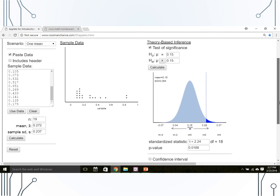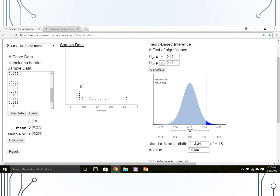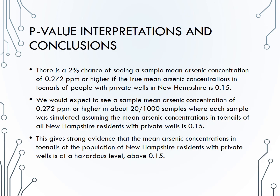Note that for these data, the validity conditions actually are not met. We have a strongly right-skewed distribution in our sample and a sample size of only 19. Because validity conditions were not met, we will use the simulation p-value of 0.02. We would state that there is a 2% chance of seeing a sample mean arsenic concentration of 0.272 parts per million or higher, if the true mean arsenic concentration in toenails of people with private wells in New Hampshire is the null value of 0.15.